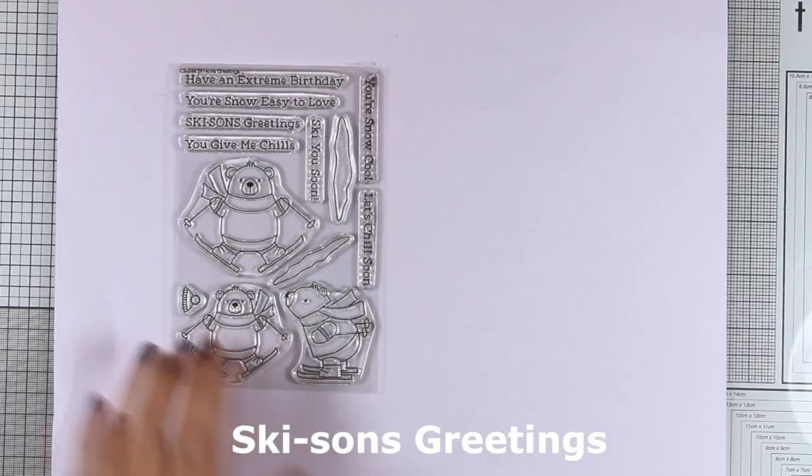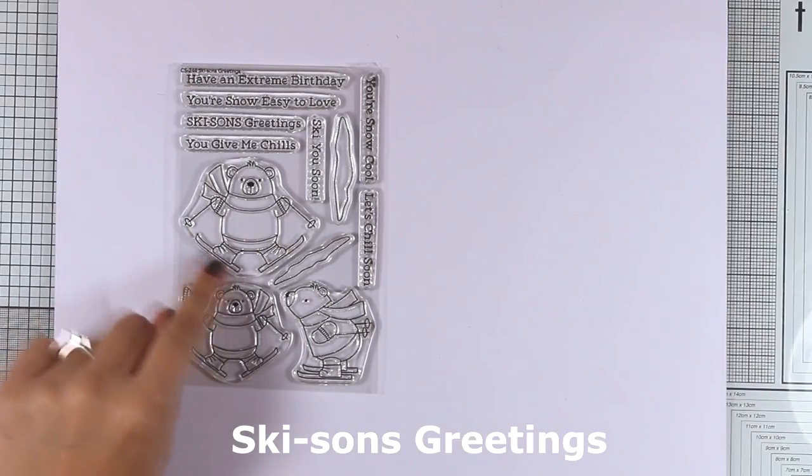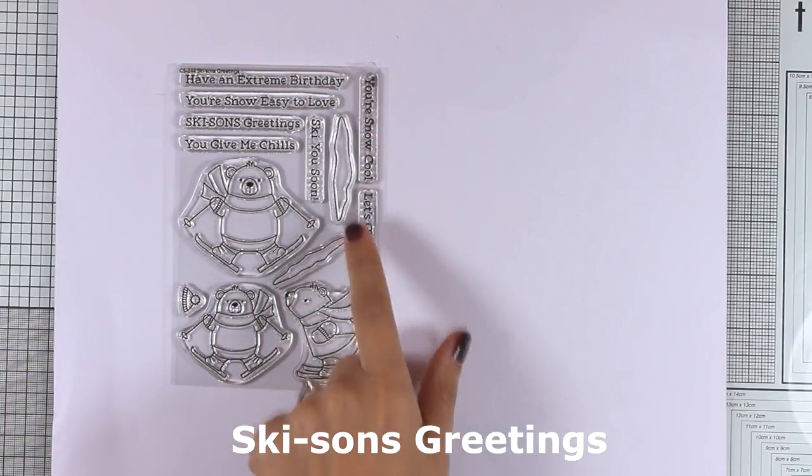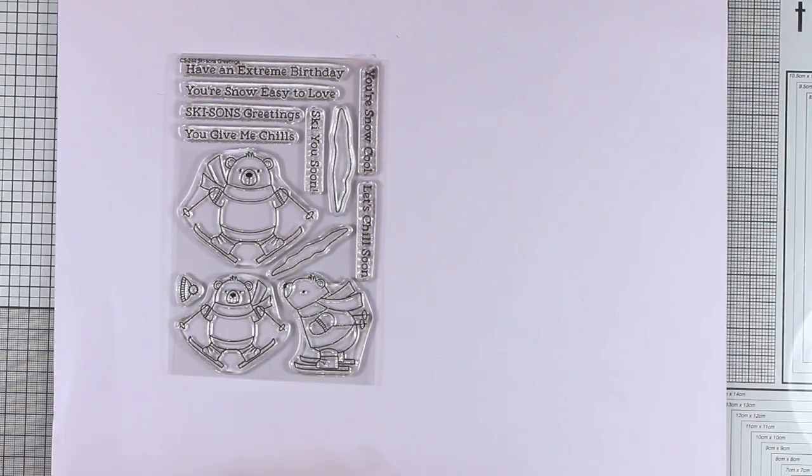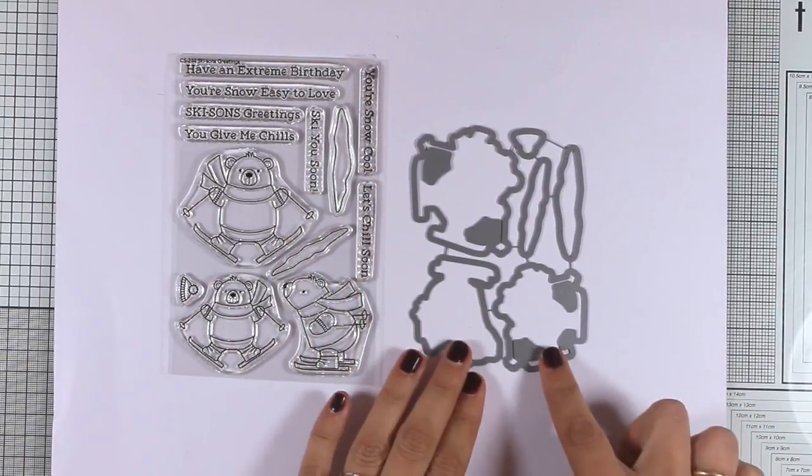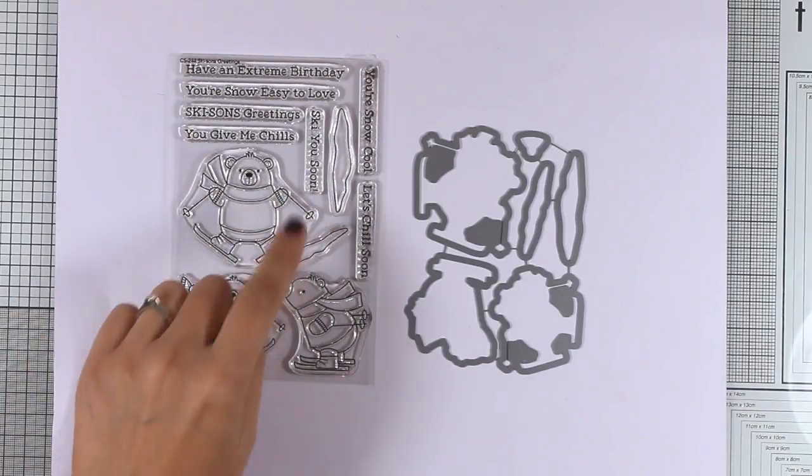Here's another adorable stamp set, this is the Skissons Greetings. You get a polar pair in three different positions, and you also get designs for creating ice or a snowbank. There are also matching dies to cut them out and pop them on your cards.